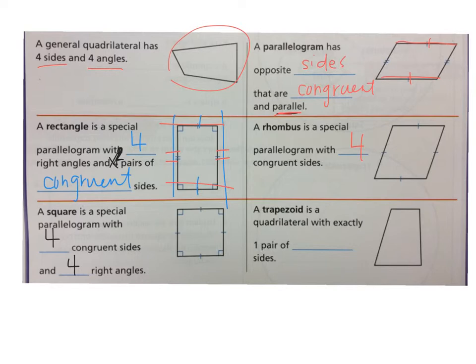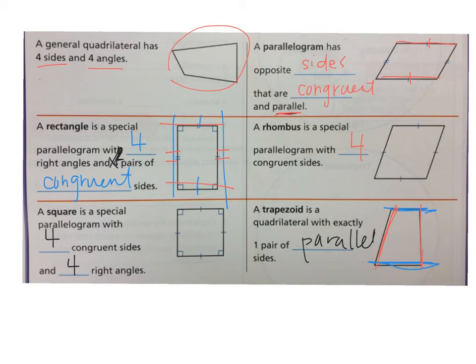How would you describe a trapezoid? A trapezoid is a quadrilateral with exactly one pair of parallel sides. You can see right here these two sides are parallel — they will never intersect. But what about these two lines? Are these two parallel? No — if you kept going, eventually they would intersect. The difference between a trapezoid and a parallelogram is that a parallelogram has two sets of parallel sides, but the trapezoid only has one pair.